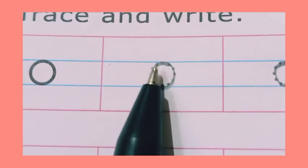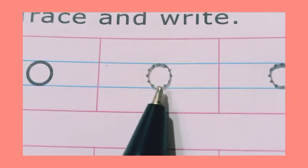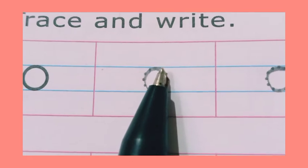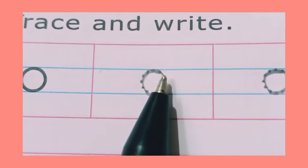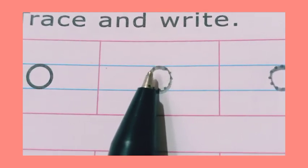First of all, we draw a circle. What do we make, kids? Circle. Round and round. Circle.